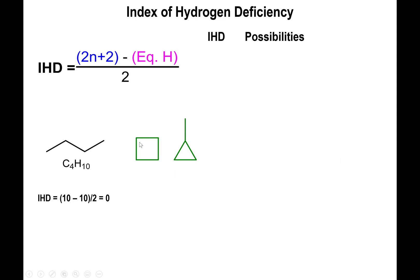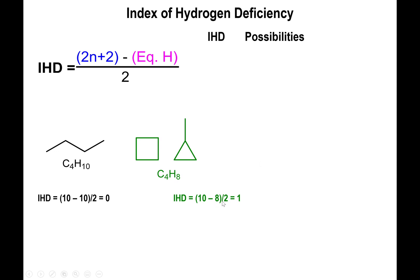Cyclic alkanes are a little different. If you count the hydrogens in cyclobutane (C4H8), we only have eight hydrogens even though we have four carbons. So 2n + 2 is still 10, but now we only have eight hydrogens: 10 − 8 = 2, divided by 2 gives an IHD of 1.